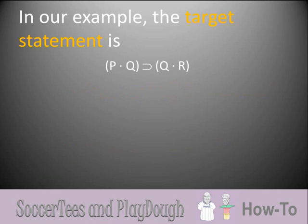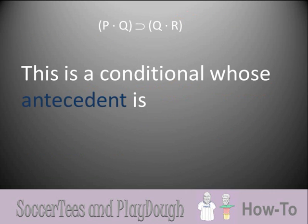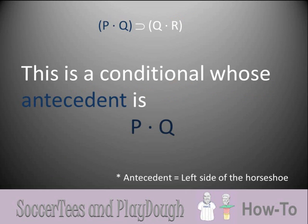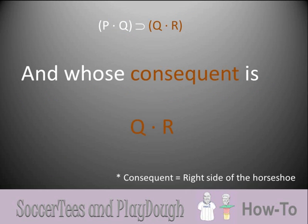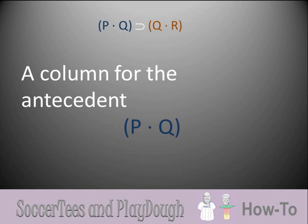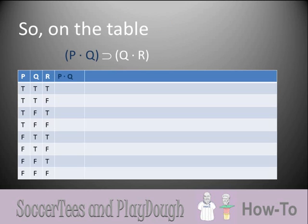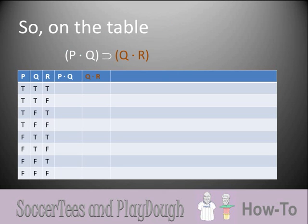In our example, the target statement is: if P and Q, then Q and R. So what are the component compound statements? This is a conditional whose antecedent is P and Q, and whose consequent is Q and R. So we'll need a truth column for each of these component parts — a column for the antecedent P and Q, and a column for the consequent Q and R.